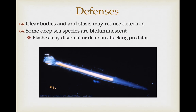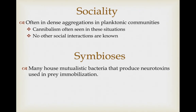Their clear bodies in stasis may reduce detection by predators. Some deep-sea species are bioluminescent and can produce flashes of light, thought to disorient or deter attacking predators. They're important keystone predators in planktonic communities and can be found in dense aggregations where larger individuals will sometimes cannibalize smaller ones. Other than that, no complex social interactions are known. The neurotoxins used to subdue prey are produced by mutualistic bacteria they are housing.